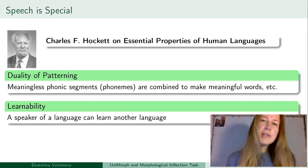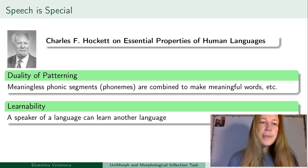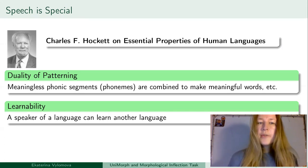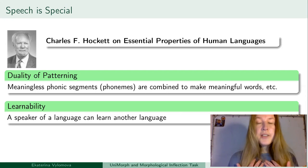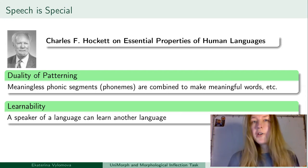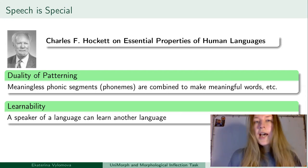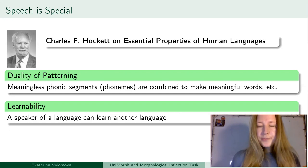In addition, Hockett outlined other properties such as learnability — a speaker of a language can learn another language. For instance, my native language is Russian, but I can still learn English, Chinese, or Hebrew.